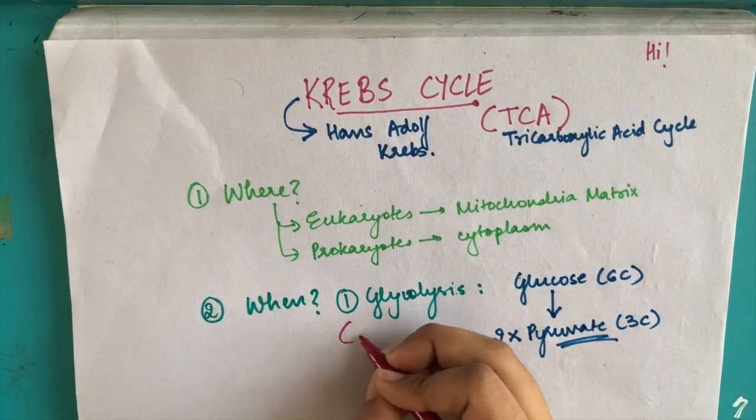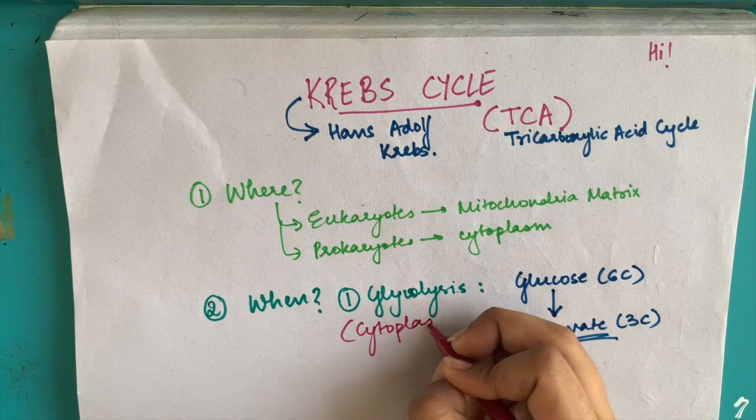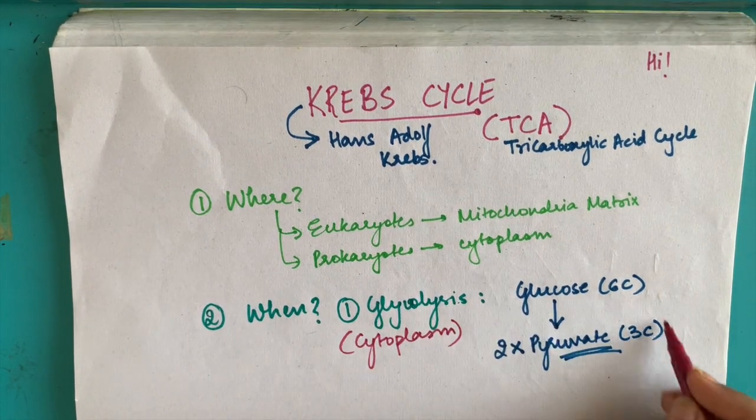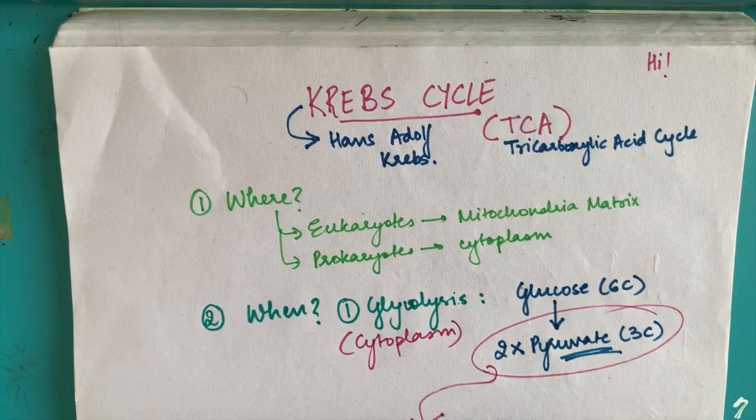Glycolysis takes place in the cytoplasm and the product of glycolysis, pyruvate, is now taken to the TCA cycle or the Krebs cycle.